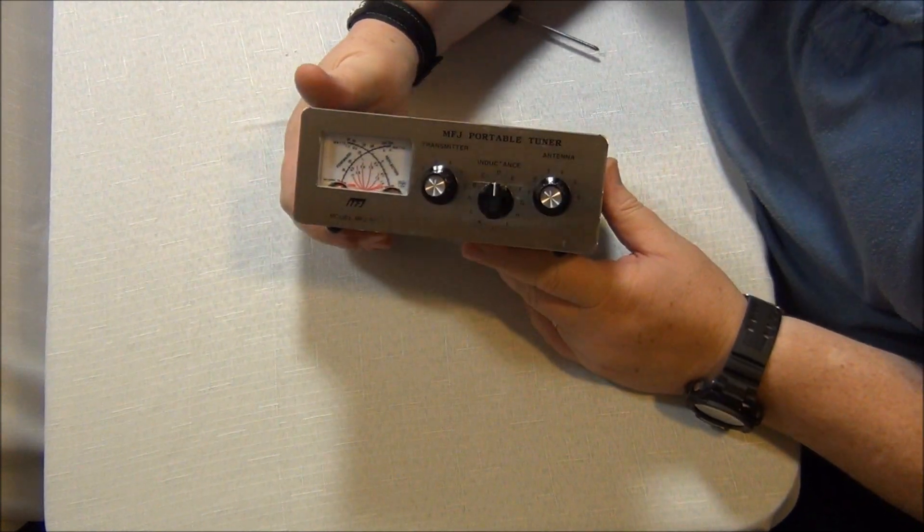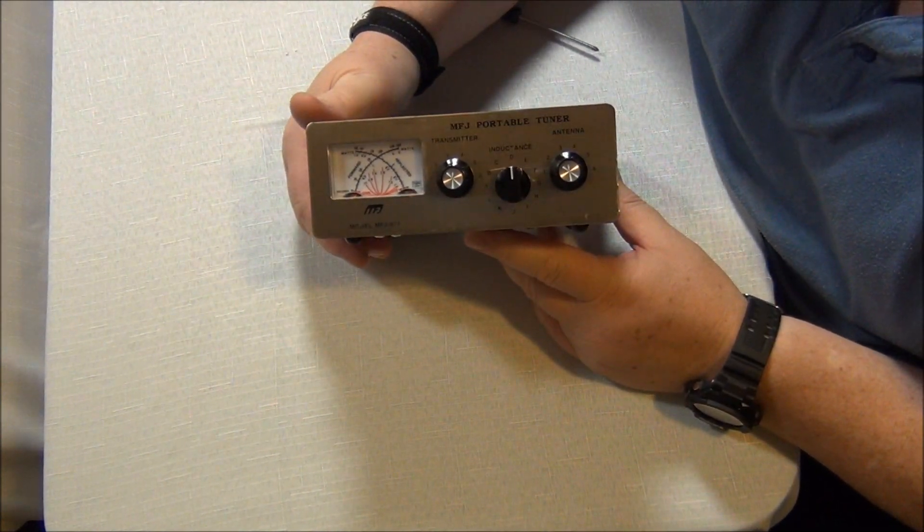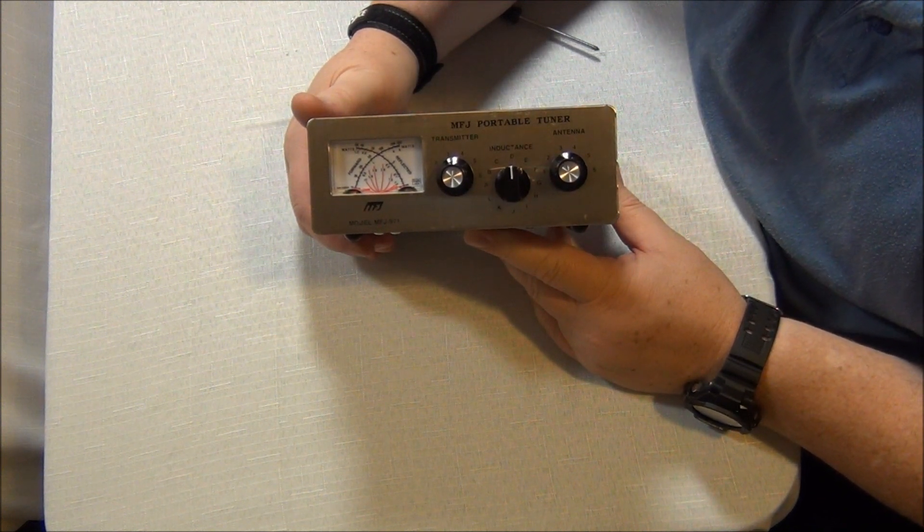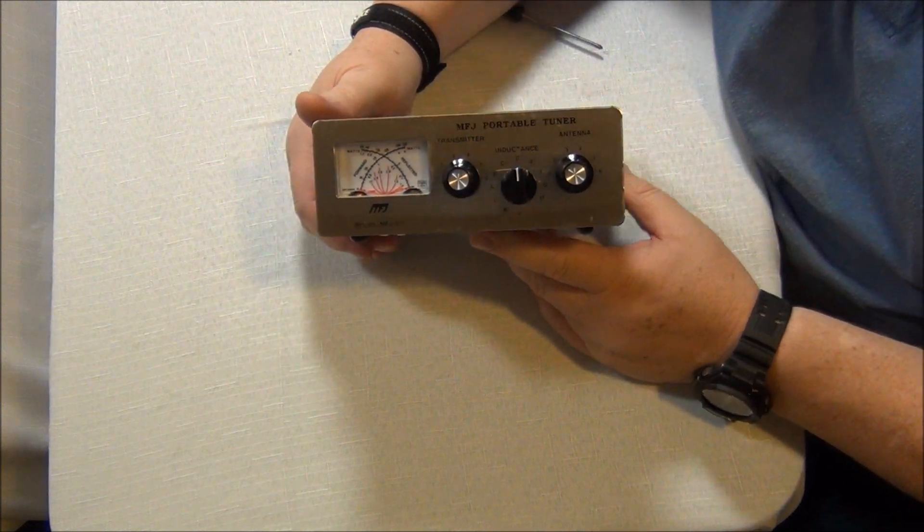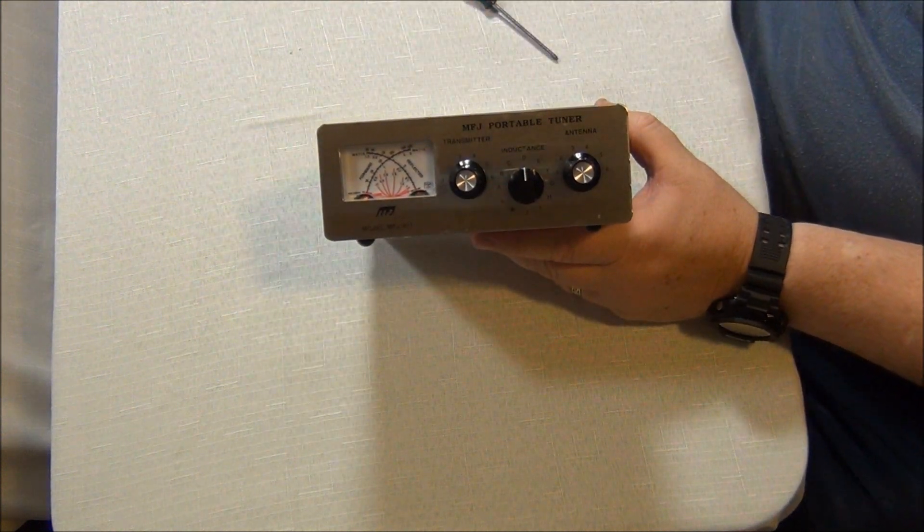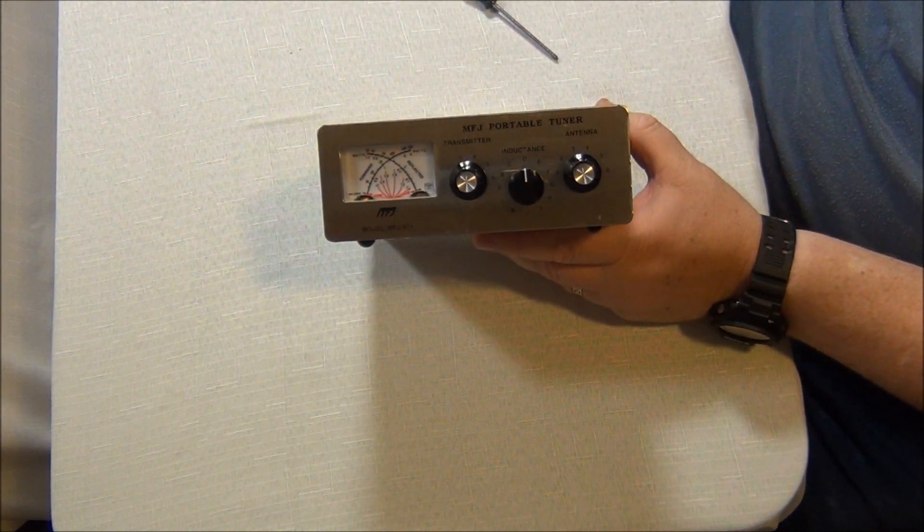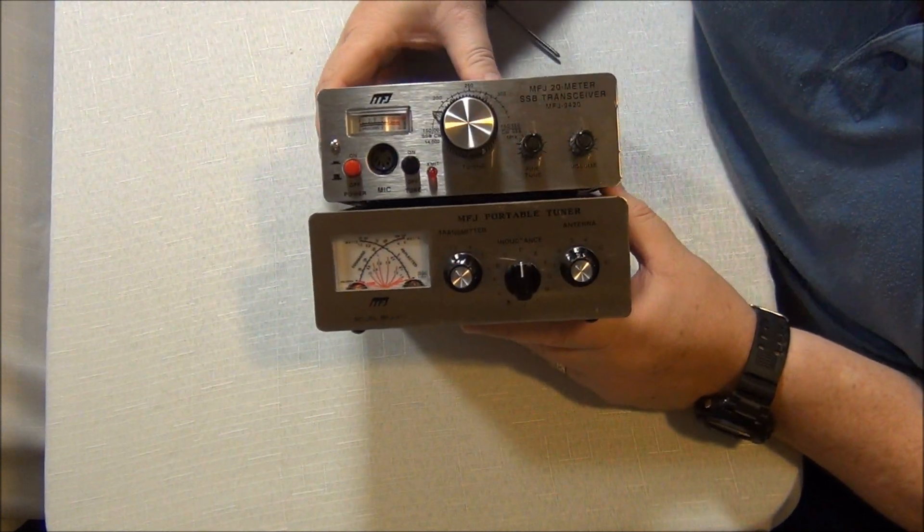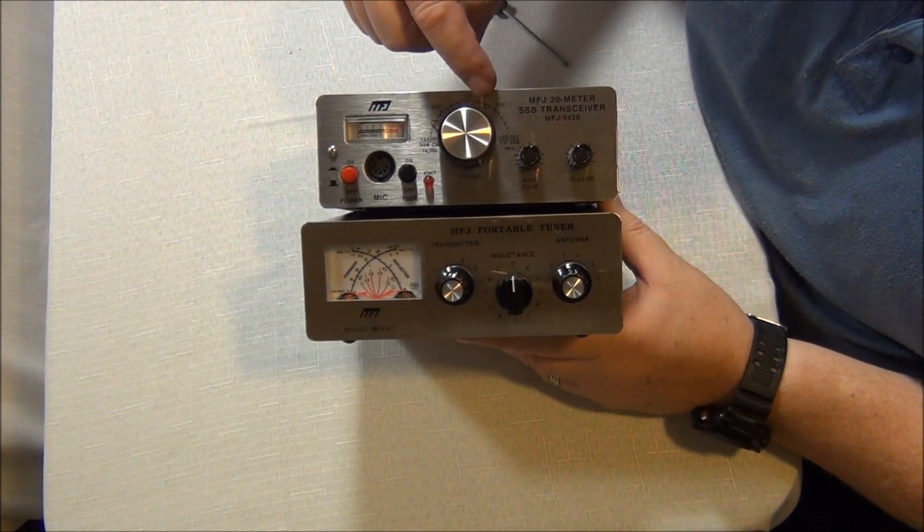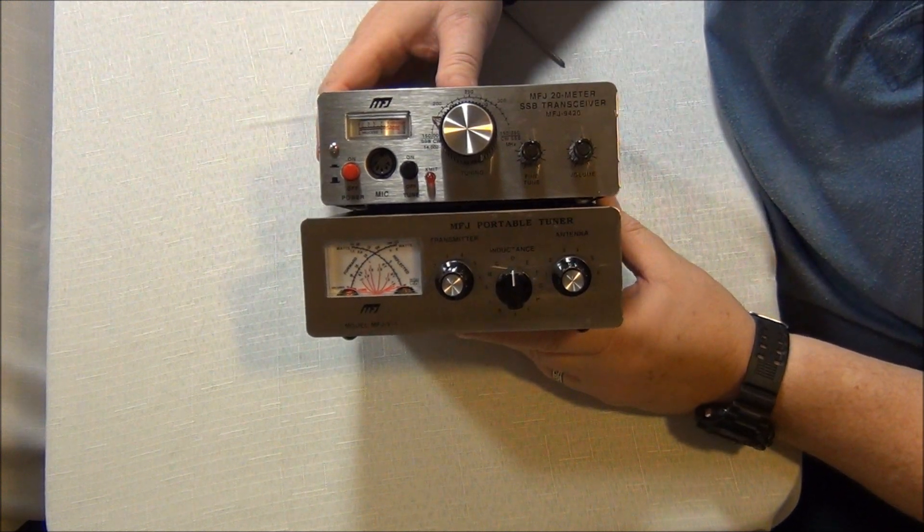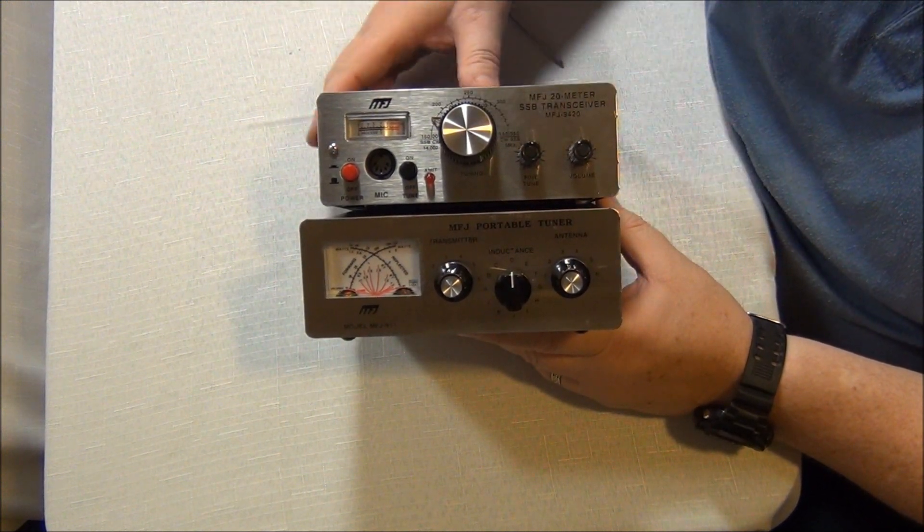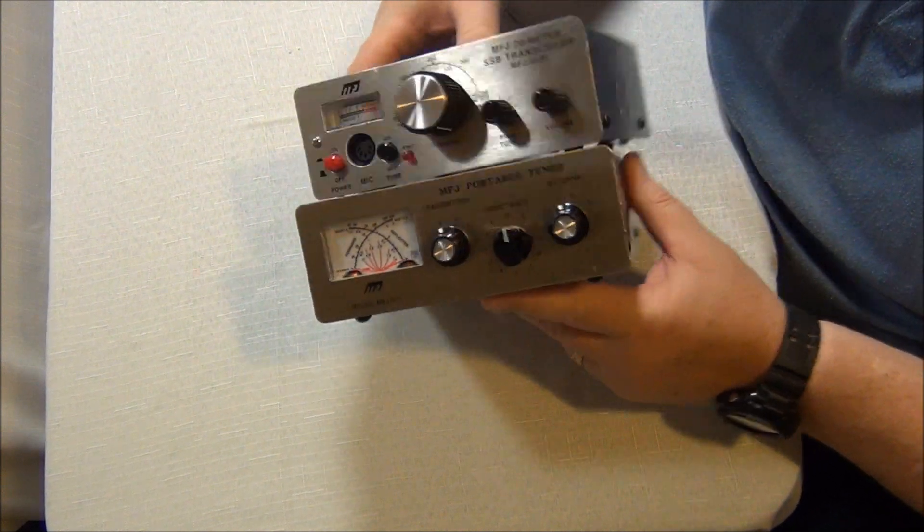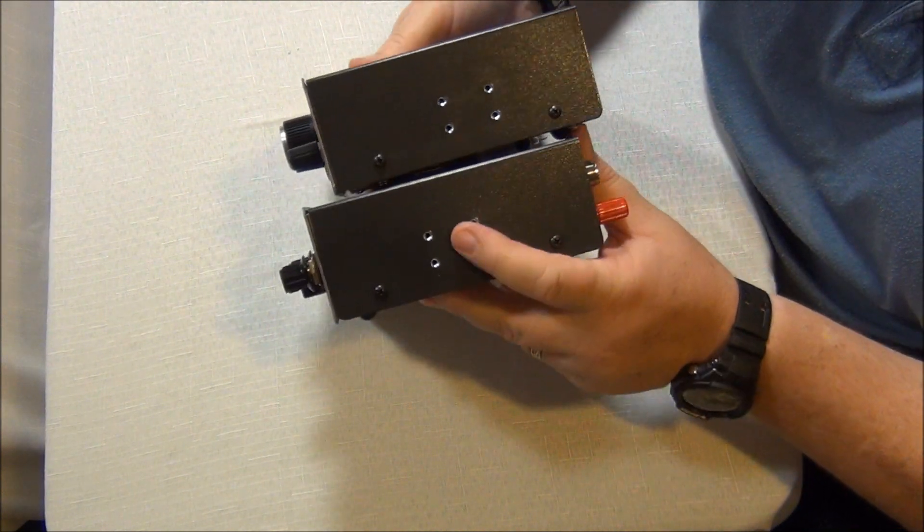Okay, so that is the Model MFJ 971 Portable Antenna Tuner, and we're going to be connecting that in with our MFJ 20 meter single sideband. This is an MFJ 9420.